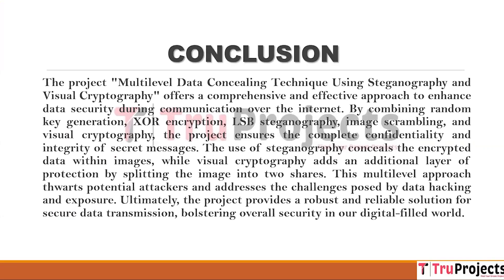In conclusion, the project multi-level data concealing technique using steganography and visual cryptography proposes a comprehensive and practical method for improving data security during internet communication. By integrating random key generation, XOR encryption, LSB steganography, image scrambling, and visual cryptography, the project ensures the confidentiality and integrity of hidden messages. Steganography hides encrypted data within images, while visual cryptography adds an extra degree of security by splitting the image into two parts. This layered approach deters potential attackers and delivers a strong, dependable solution for secure data transmission, improving overall security in our digital world.